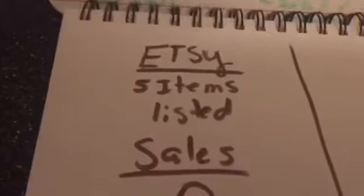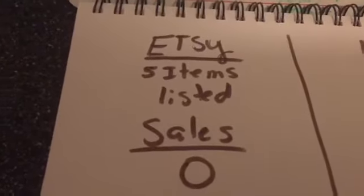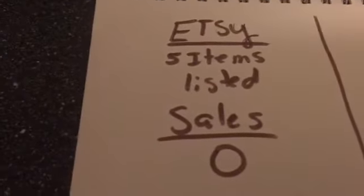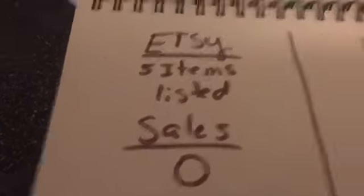Let's see. Etsy, I have five items listed, and they're digital, and I'm about to start sewing a whole lot of stuff and put on Etsy and creating a lot of jewelry and stuff. So there's zero sales.